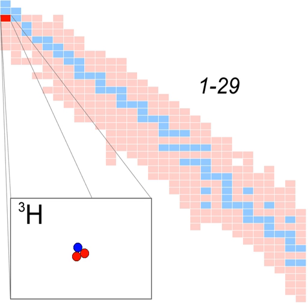Tritium, symbol T or 3H, also known as hydrogen-3, is a radioactive isotope of hydrogen. The nucleus of tritium, sometimes called a triton, contains one proton and two neutrons, whereas the nucleus of protium, by far the most abundant hydrogen isotope, contains one proton and no neutrons.